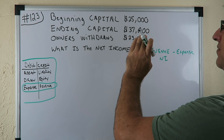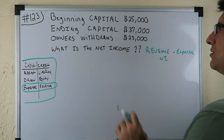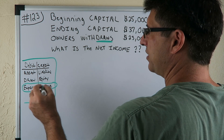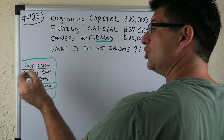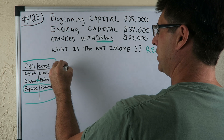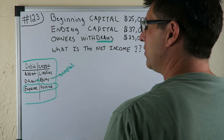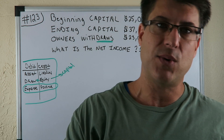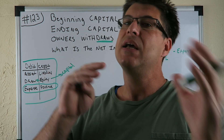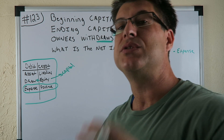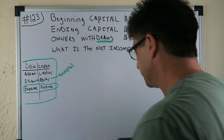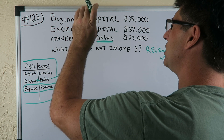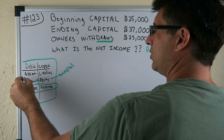The question has beginning capital of twenty-five thousand, ending capital of thirty-seven thousand, and an owner's withdraw of twenty-three thousand. A withdrawal reduces equity or capital — equity and capital are pretty synonymous. A withdrawal is like a personal take from the business; it's not a business expense, it's like a shareholder distribution that reduces the equity of the business.